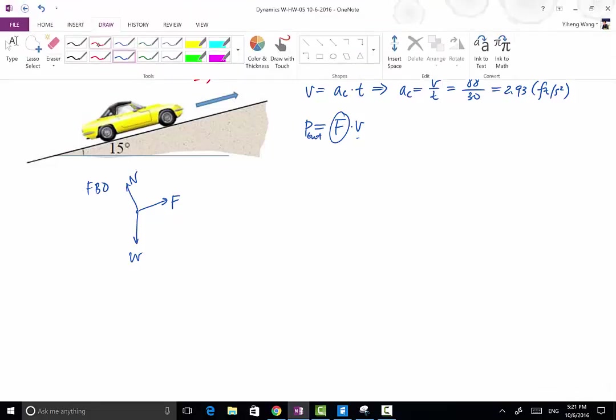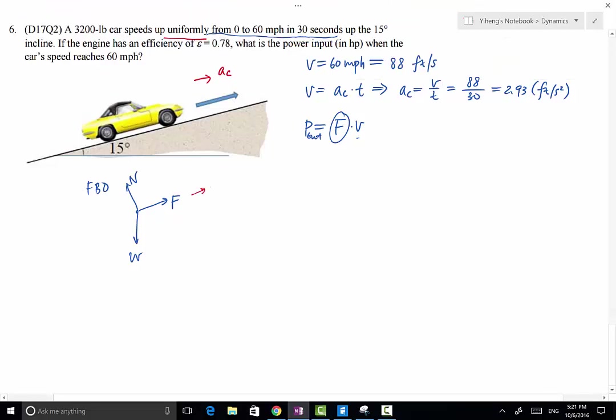So if we draw also the kinetic diagram, the movement is along this direction, along the inclined surface with a constant acceleration.